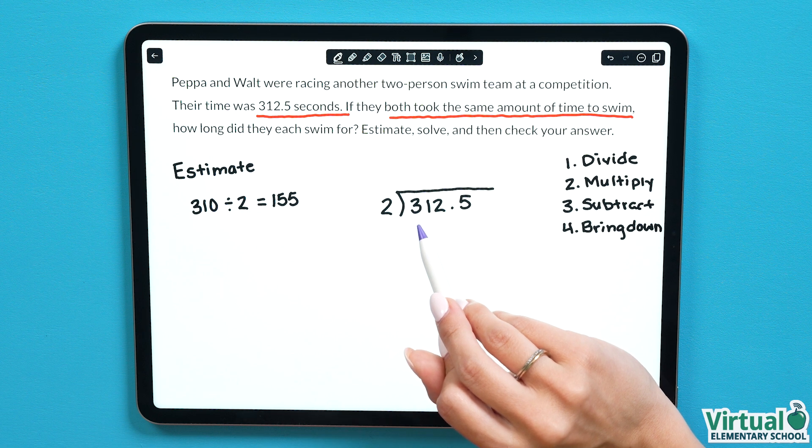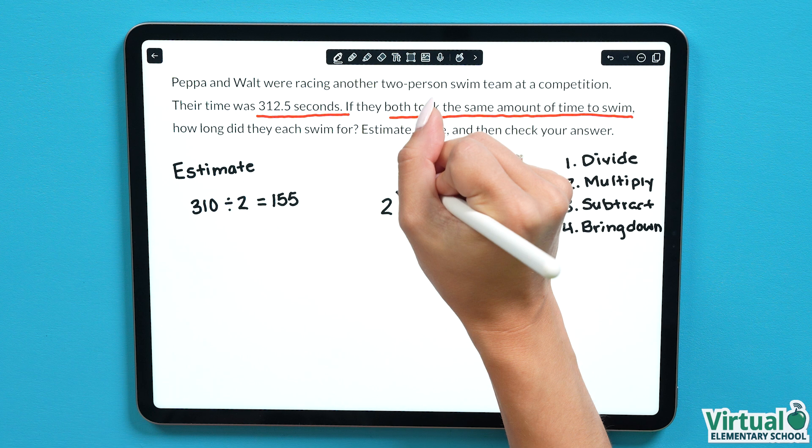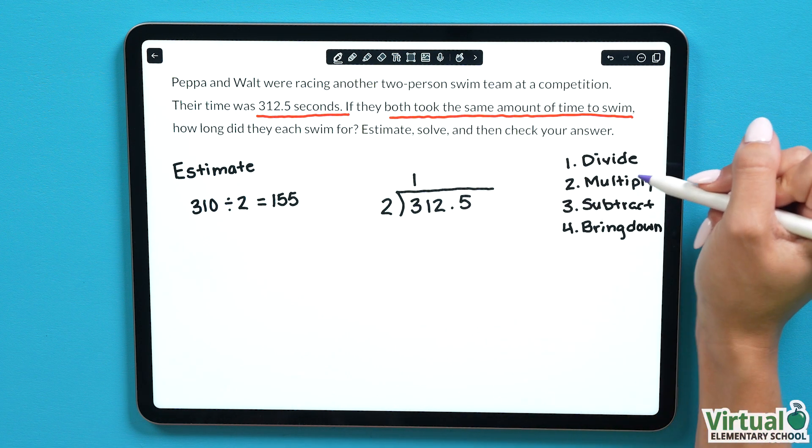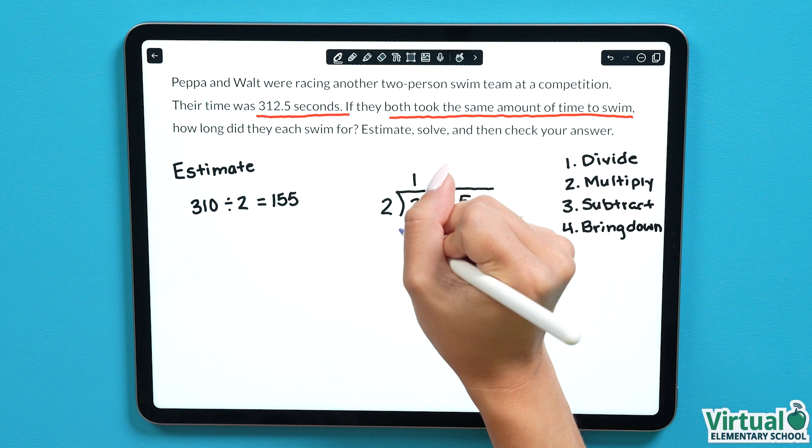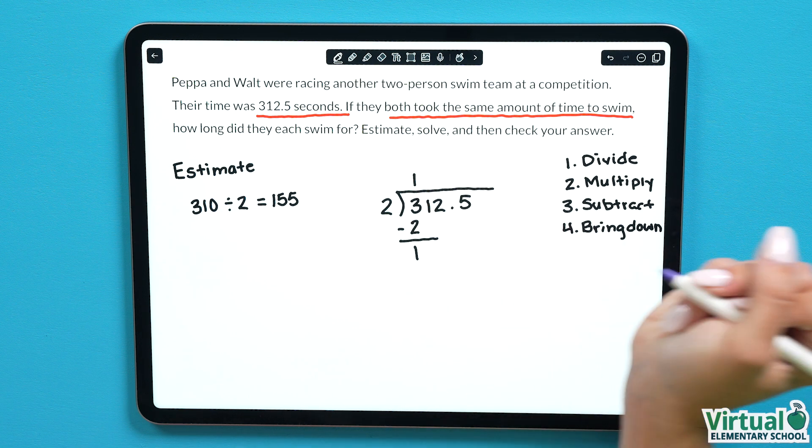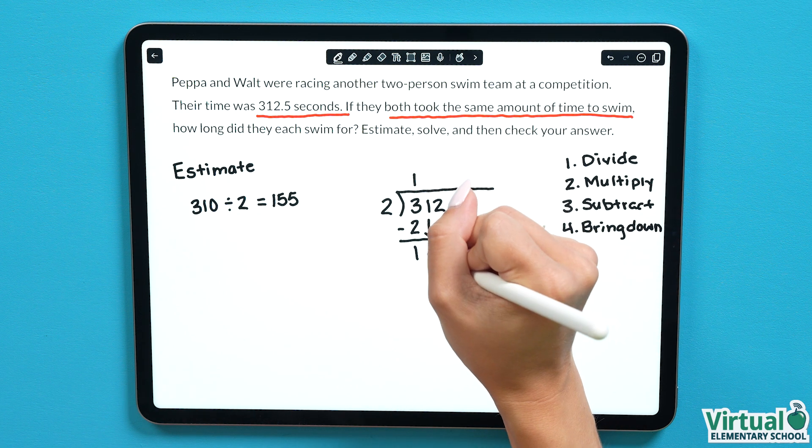Looking at our first value here we have a 3. 3 divides by 2 one time evenly, so we can put a 1 up here. Now we have to multiply, 2 multiplied by 1 gives us 2. We can subtract, 3 subtract 2 equals 1, and now we need to bring down our next value, which is a 1 as well.